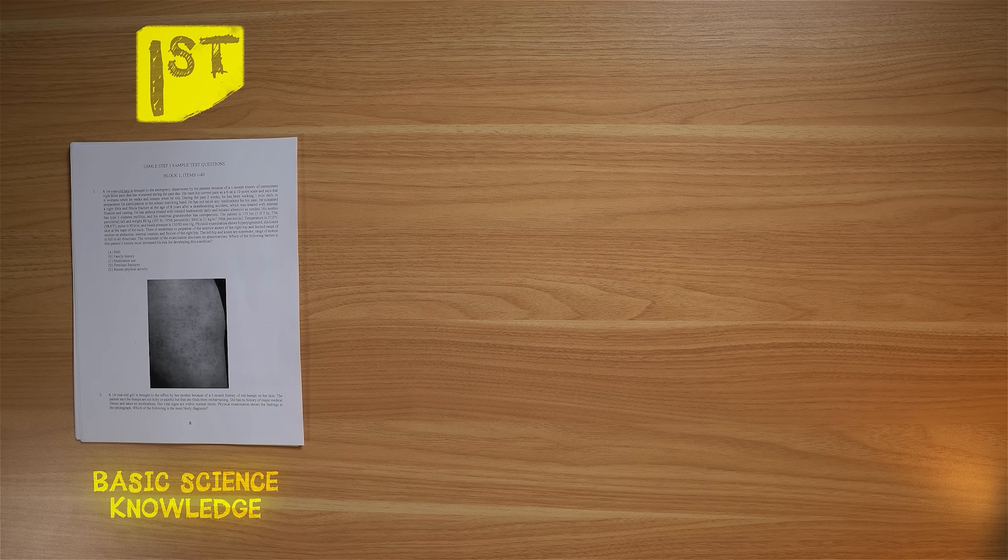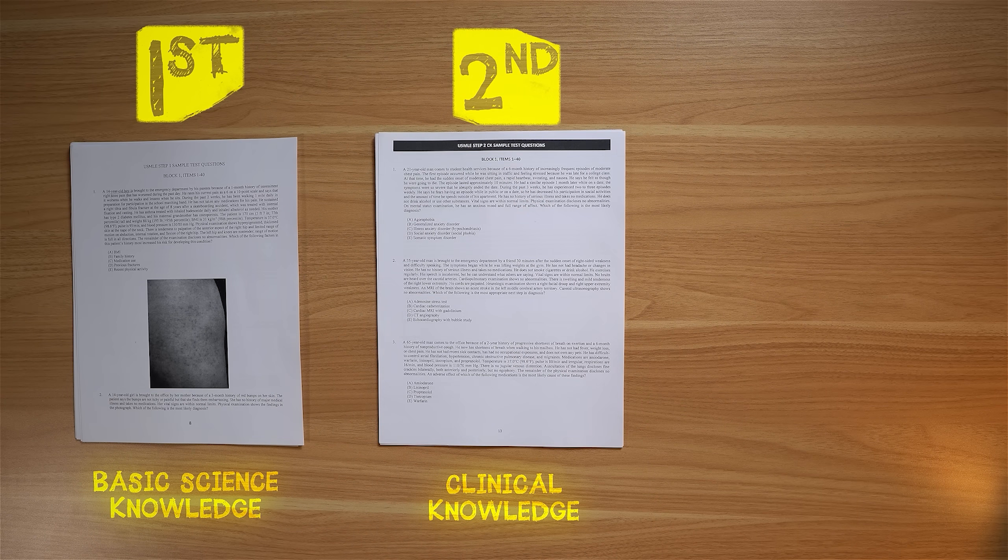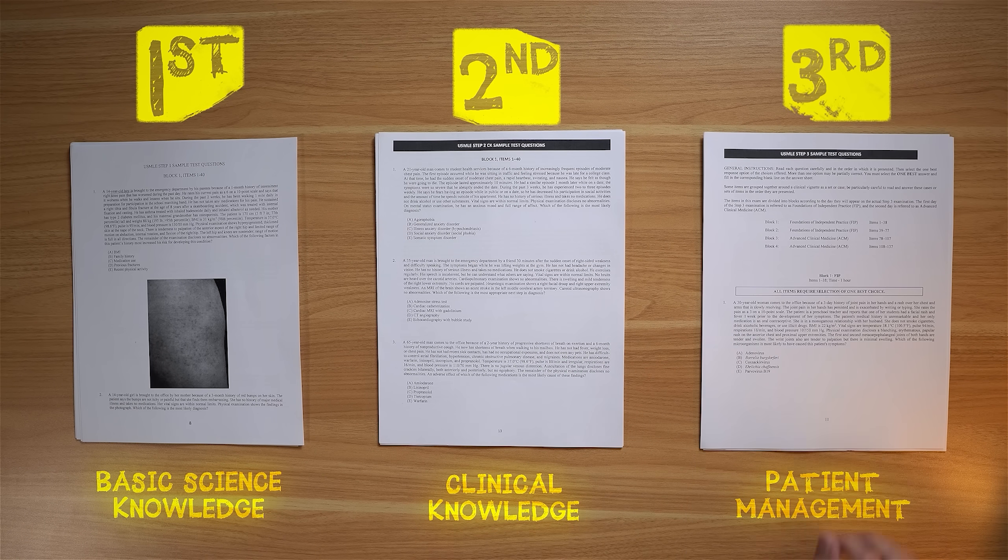Most students will complete step one which covers basic science knowledge at the end of their second year in medical school. They'll take step two which covers clinical knowledge during their fourth year in medical school. And they'll take step three which covers patient management after they graduate, usually during their first year in residency.